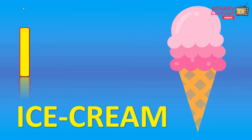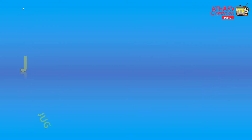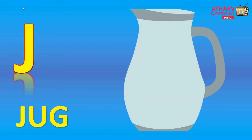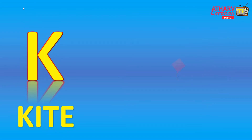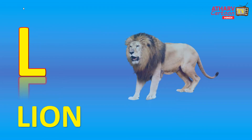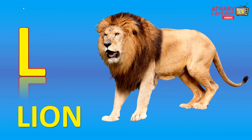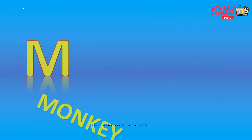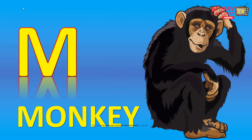I. I for Ice Cream. J. J for Jug. K. K for Kite. L. L for Lion. M. M for Monkey.